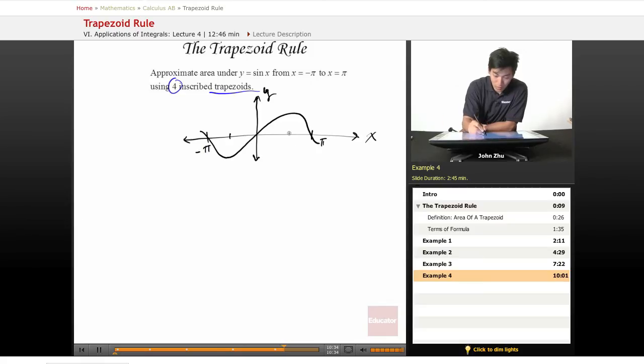So using four trapezoids, we'll have these four, two, three, four. So now they all look like triangles, which is perfectly fine.